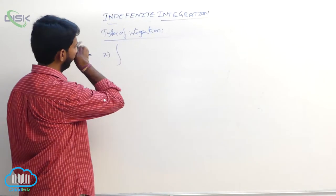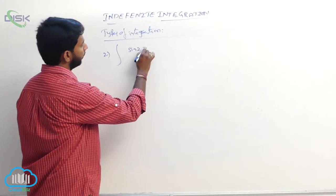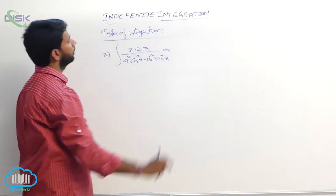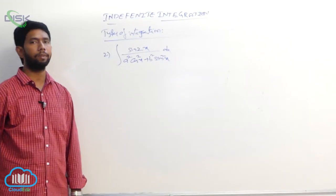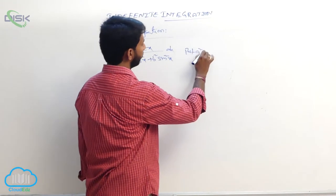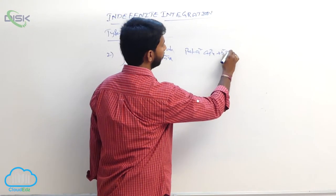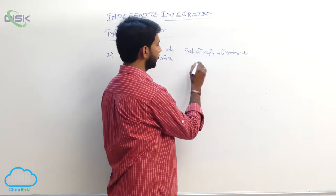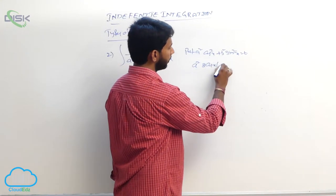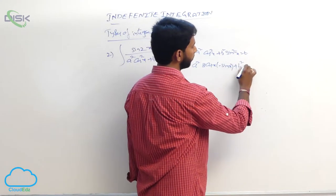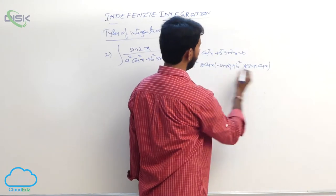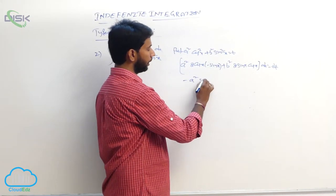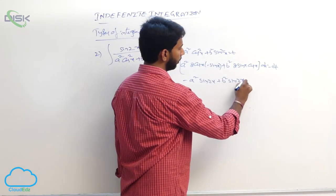Go to the second example: integral of sin 2x divided by (a²cos²x + b²sin²x) dx. Put a²cos²x + b²sin²x equal to t. Differentiate with respect to x: a² times 2cos x times (-sin x) plus b² times 2sin x cos x dx equals dt. This simplifies to (-a²sin2x + b²sin2x) dx equals dt.